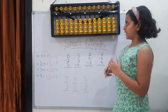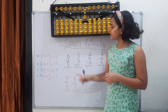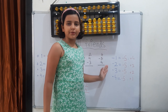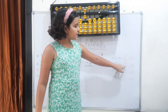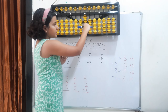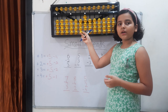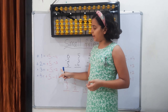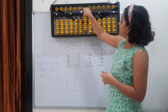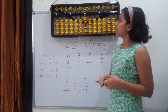Now let's do these sums. First sum: 6. On the units rod, 5 and 1 makes 6. Then minus 2 — I have only one bit, so I'll use the small friends formula: minus 2 equals minus the 5 plus the 3. Minus the 5 and add the 3: 1, 2, 3. Now add 3 with no bits, so use the addition formula: plus 3 equals plus the 5 minus the 2. Plus the 5, then minus the 2: 1, 2. The answer is 7.